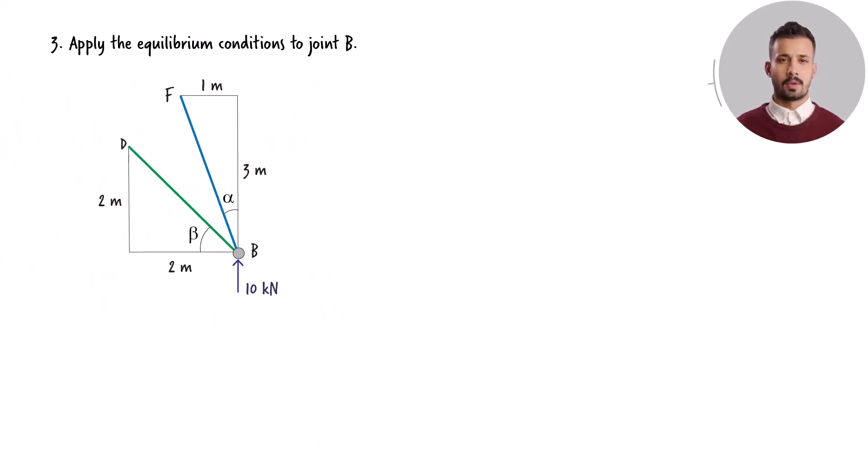Joint B links two structural members. The orientation of each member can be ascertained by examining the truss's geometric configuration. The angle formed between member BF and the vertical axis is 18.43 degrees, and member BD is oriented at a 45 degree angle relative to the horizontal axis.